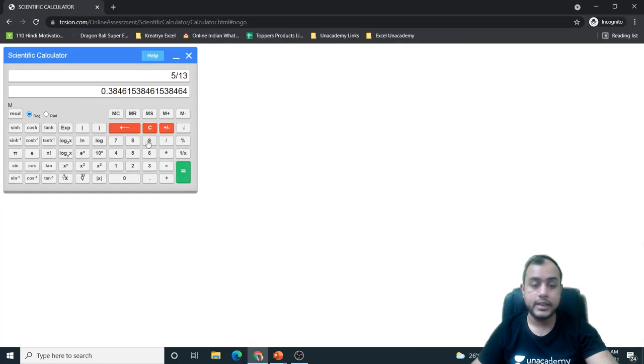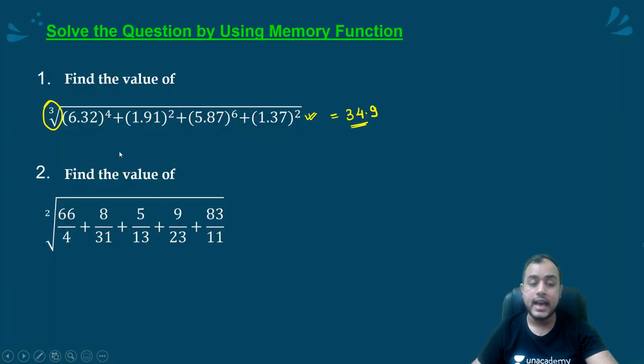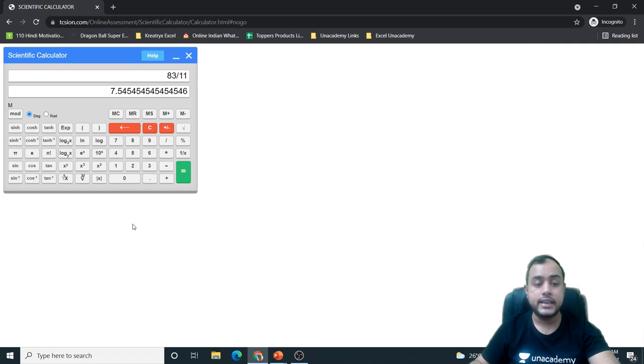9 by 23. Press equal to then M plus. 83 by 11. Press equal to then M plus. Now, the entire data has been stored in the memory.